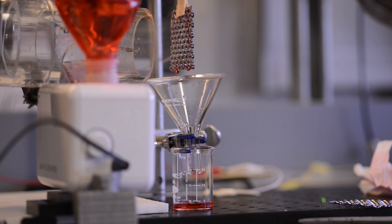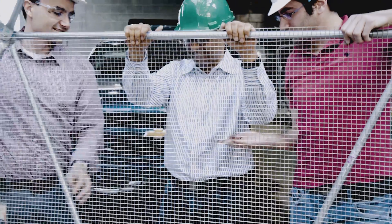The droplets then collect on that mesh, drain down into a collecting pan, and can be reused in the power plant or sent to a city's water supply system.